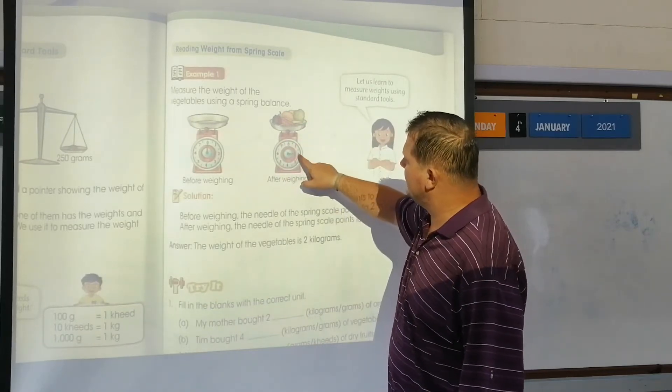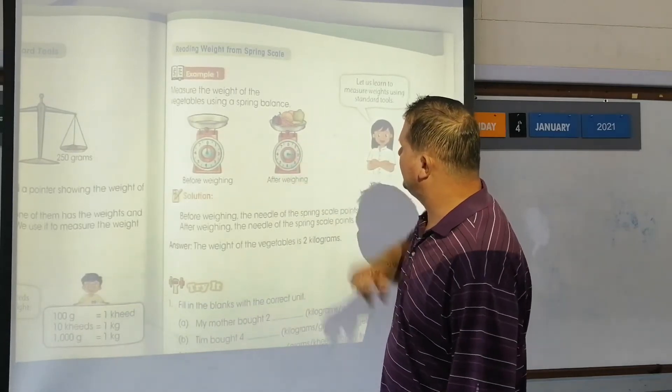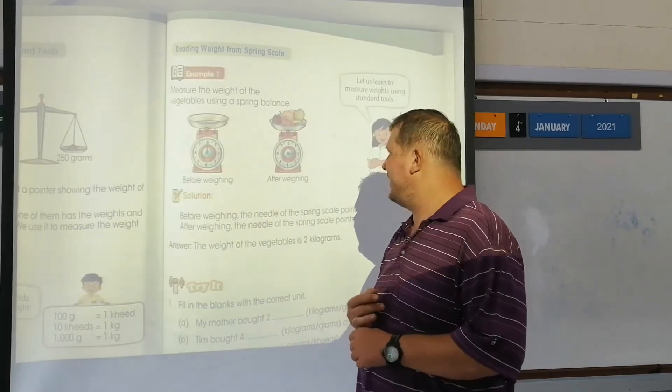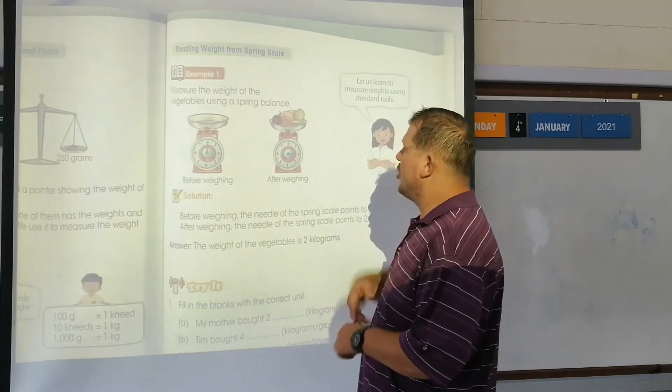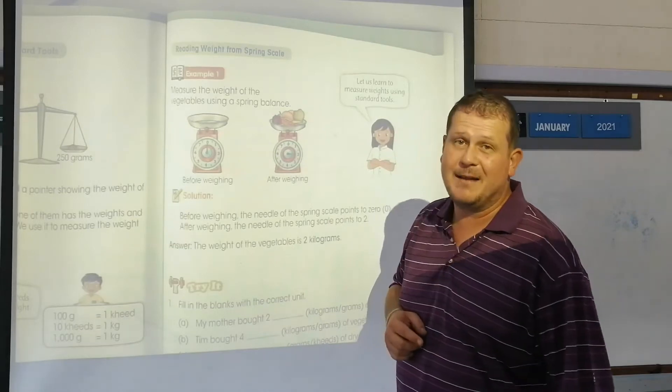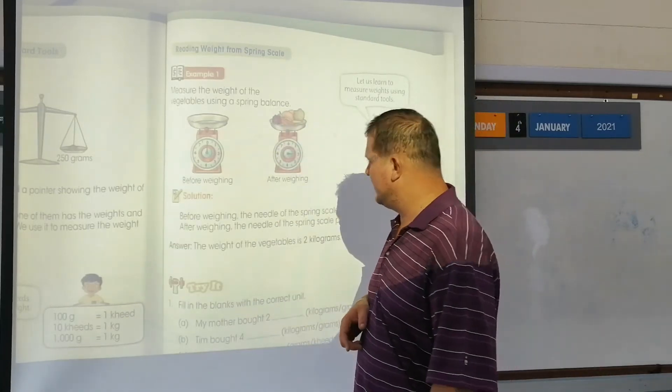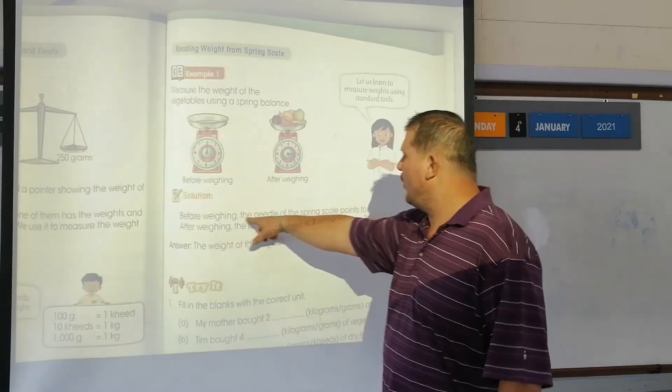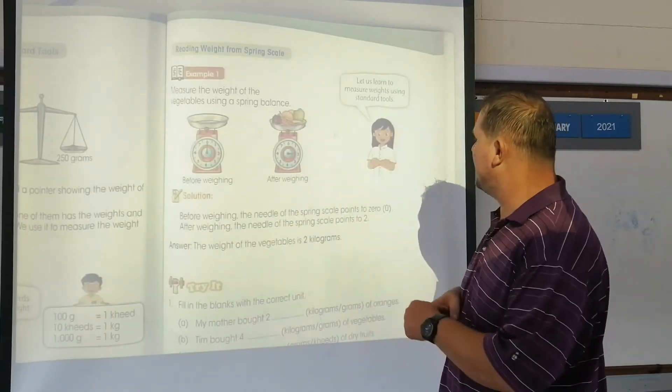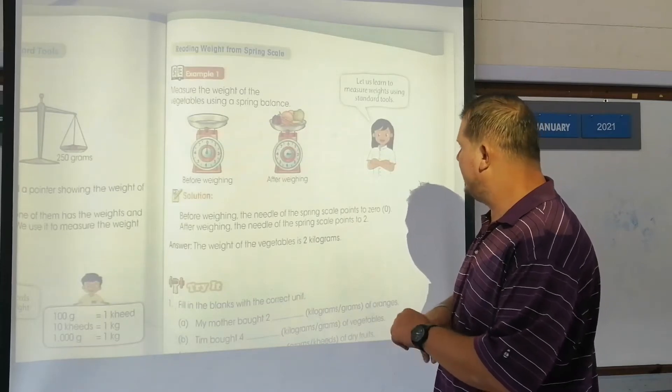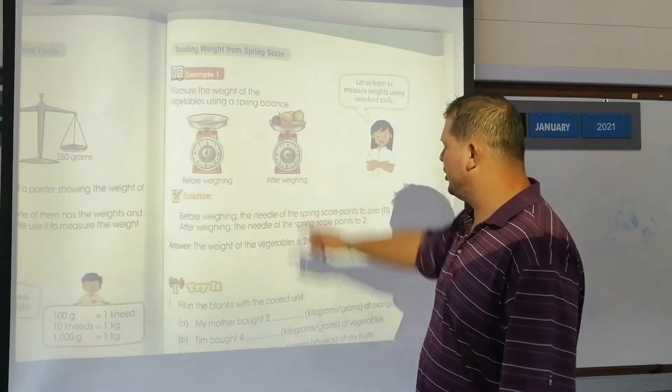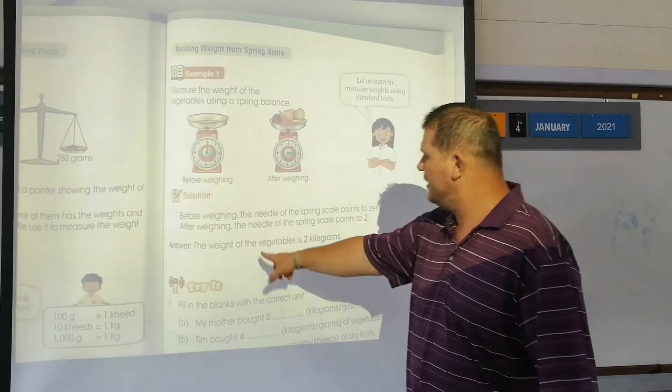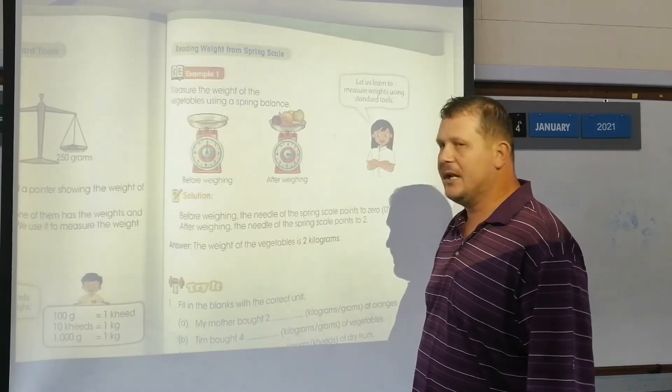In this instance, it looks like it's a two, so it's probably two kilograms, because those fruit won't weigh two grams. All that fruit has to be two kilograms. The weight of the vegetables is two kilograms.